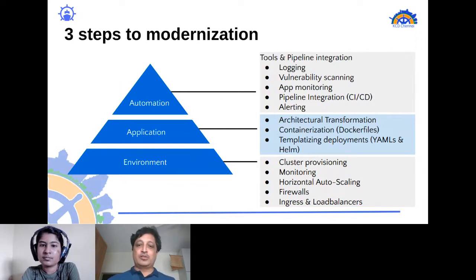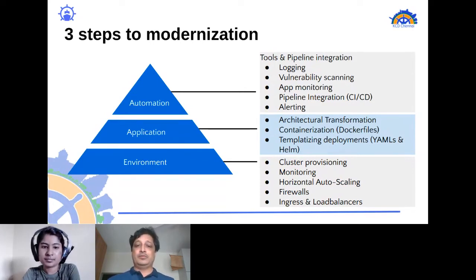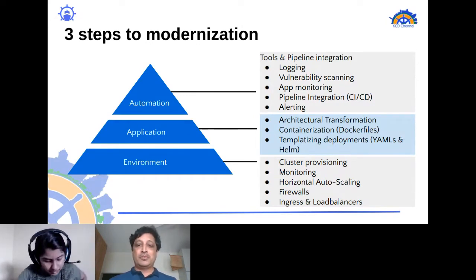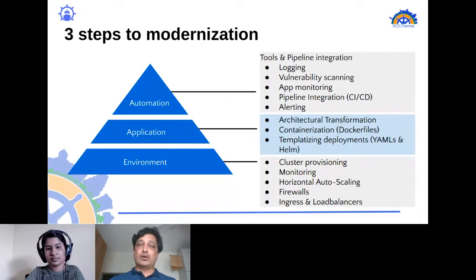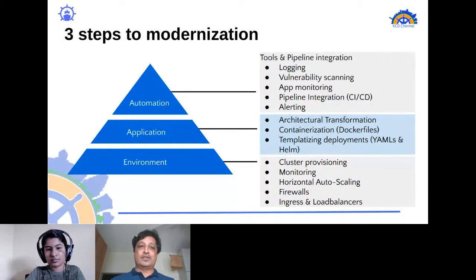The environment is of course a Kubernetes cluster. You need to provision Kubernetes clusters, then monitor those clusters — knowing what nodes are up, how they're performing, and what their high-availability settings are. They also need to be set up for horizontal auto-scaling so that nodes can come in and go out based on dynamic workloads and demands.